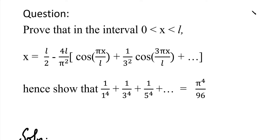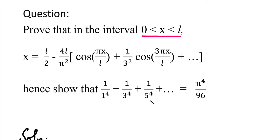Hi students. In this video we will solve a half range series problem. The question says: prove that in the interval 0 to L, x equals L by 2 minus 4L divided by pi squared, into cos(pi*x/L) plus 1 by 3 squared into cos(3*pi*x/L) plus etc. Hence show that 1/1⁴ + 1/3⁴ + 1/5⁴ + etc. equals pi⁴ divided by 96.